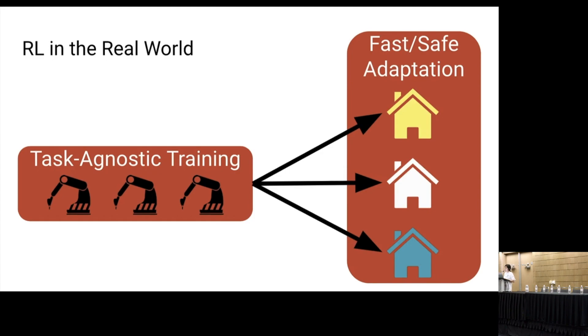In the real world, RL agents have to adapt quickly to new tasks. One example is a robot factory where, in the warehouse, robots do task-agnostic training. Then, when they're placed in someone's house, the robot has to quickly adapt to the tasks specified by the human.